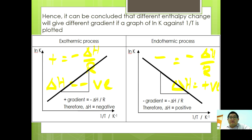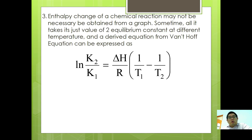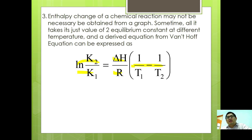Other than the graphical method, an equation method can also be used to calculate the enthalpy change of reactions. When comparing between two different temperatures, you can derive: ln(K2/K1) equals (delta H / R) times (1/T1 minus 1/T2). That is all for chemical equilibrium. Thank you.